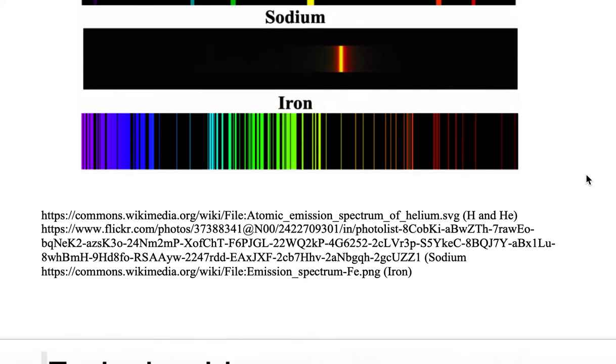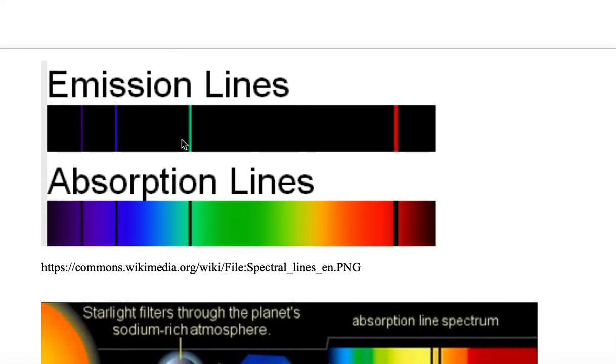So let's take a look at an example of this. Here we're looking at one element on the periodic table and we see emission versus absorption. Notice that we have a pattern.